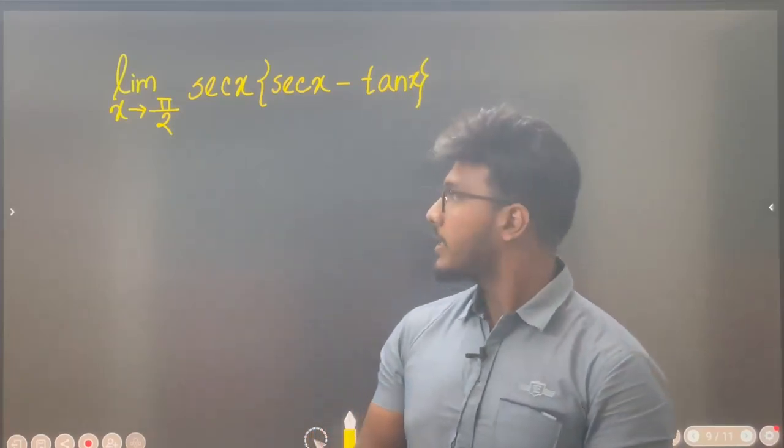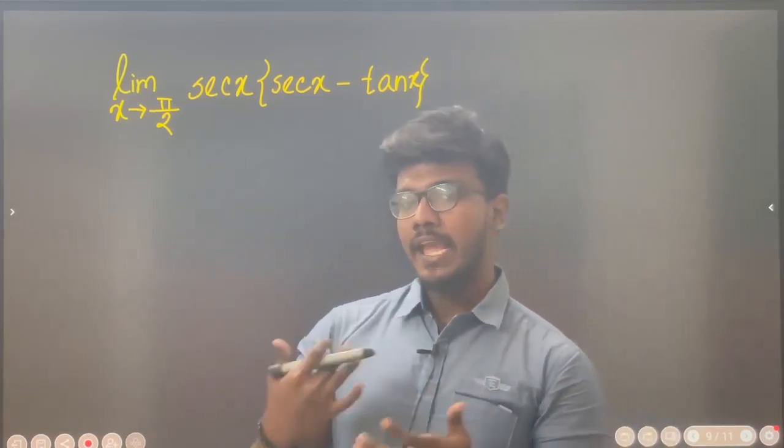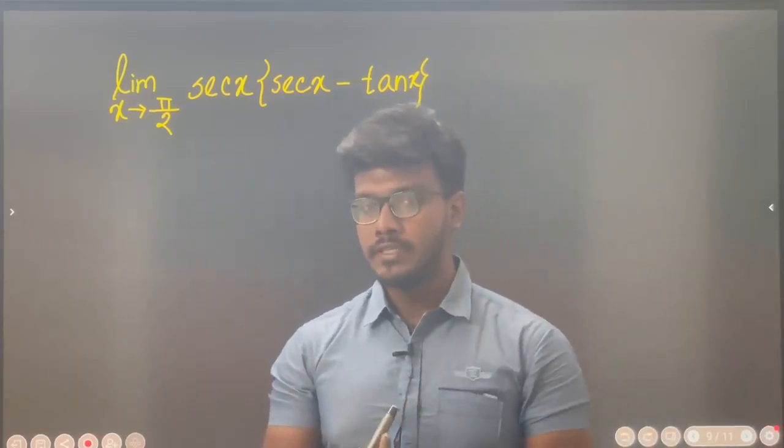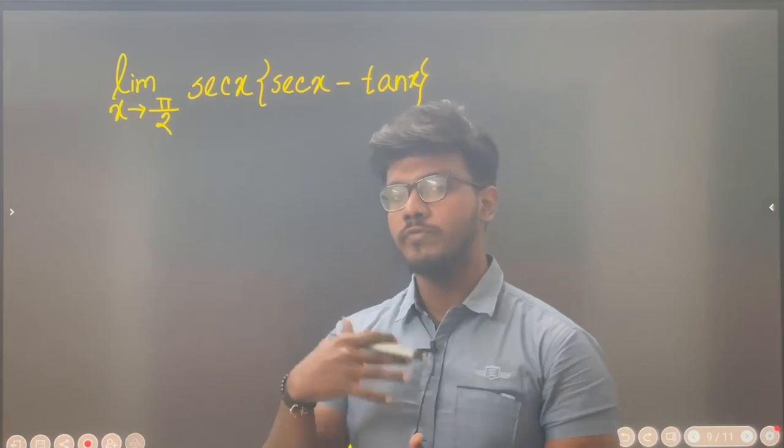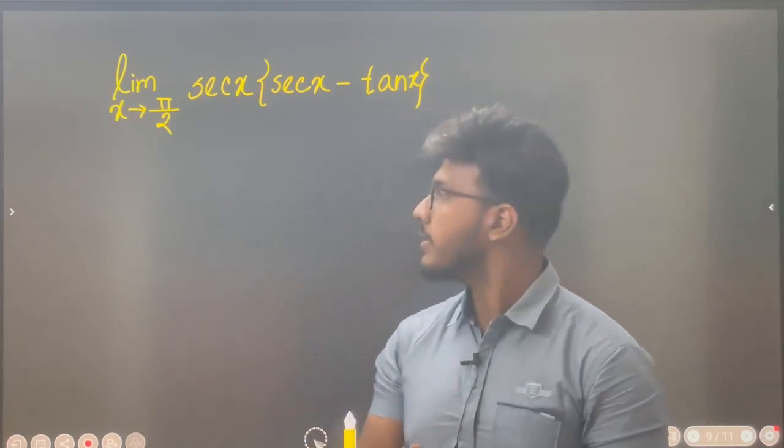Assalamu alaikum. So this formula — limit x tends to 0 — is a variation. Let's see here.